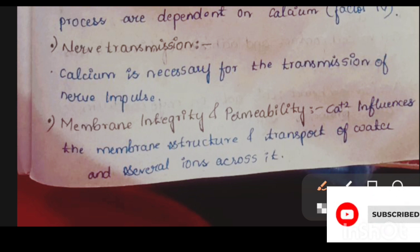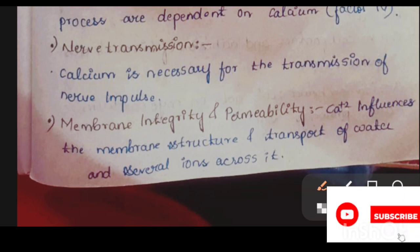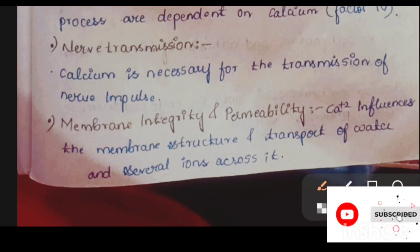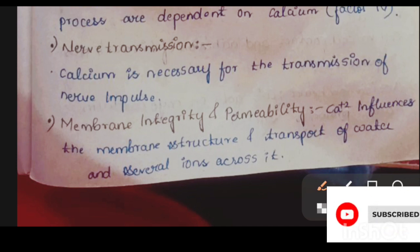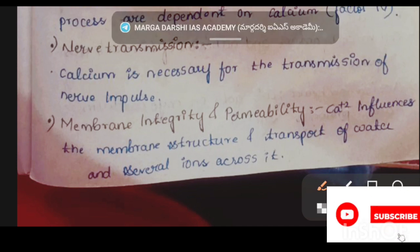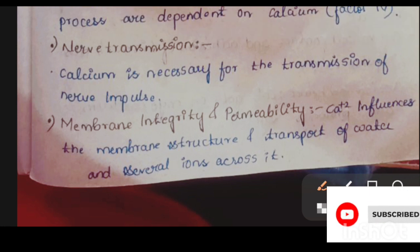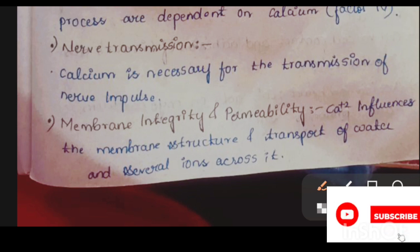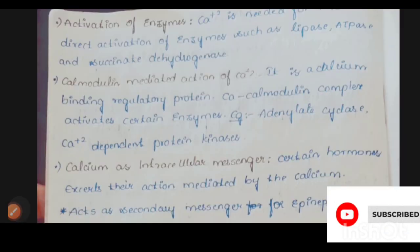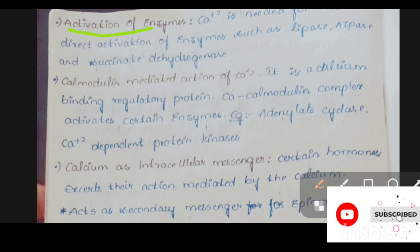The next function is membrane integrity and permeability. Calcium influences the membrane structure and transport of water and several ions across the membrane. Calcium is the main important ion that influences the transport of water and several minerals and ions across the membrane.